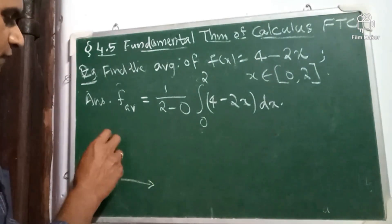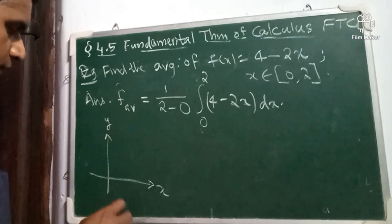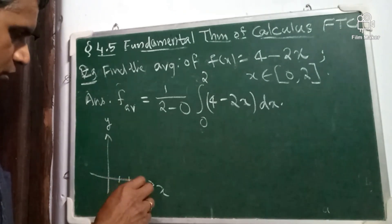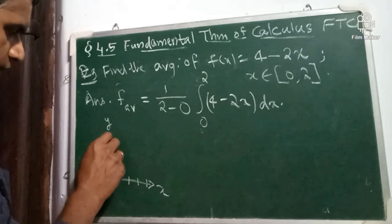First degree equation in x represents a straight line. So, this is x-axis, y-axis, 1, 2, 3, 4, 1, 2, 3, 4 and so on.